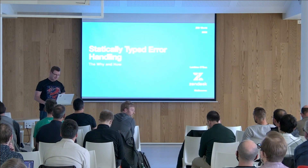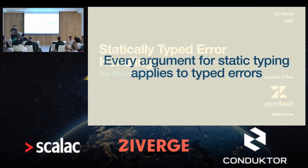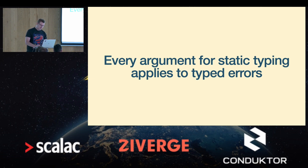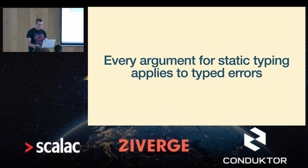I'll be talking about using static types for error handling. My starting point is that every argument I've heard for static typing applies to error handling as well. But in Scala, it hasn't been that common — it seems only ZIO is really doing static typing for errors. And this also works in reverse: arguments against static typed errors kind of boil down to arguments against static typing in general.